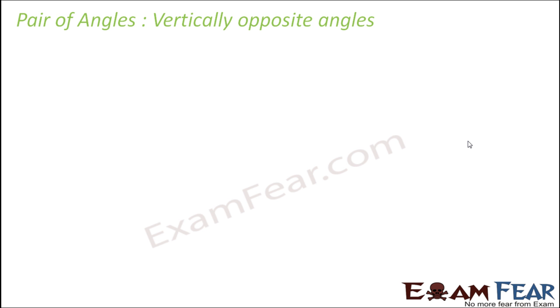Let's take another pair of angles — that is vertically opposite angles. In this case we will use a theorem. We will try to prove it. So let's see what happens when we have vertical opposite angles.